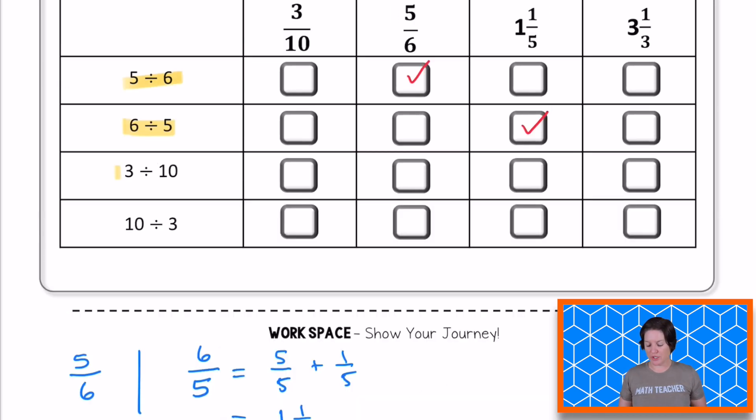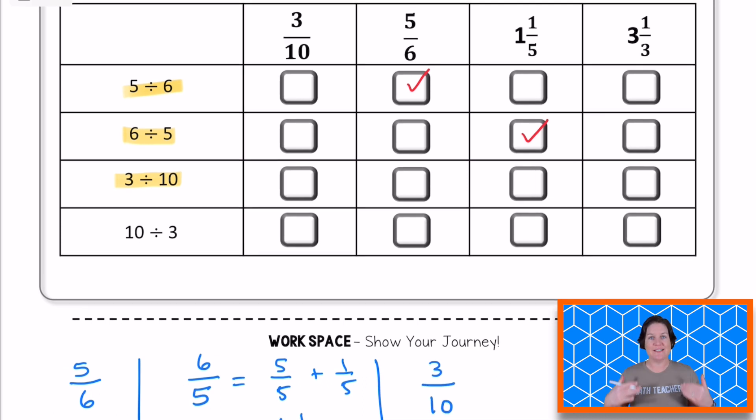Let's move on to the expression of three divided by 10. We can rewrite that as a fraction right down here. Three divided by 10 is the same thing as three tenths. Do you see that as a fraction? Yeah, I do too. The very first one. So let's go ahead and mark that.